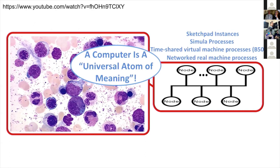This is a slide from Alan Kay — one of his recent talks where he was interviewed by Joe Armstrong. Right in the middle of his slide is this little oval: 'A computer is a universal atom of meaning.' This idea of a universal atom of meaning is really interesting, but it's very abstract.